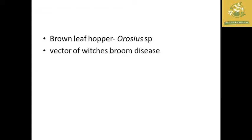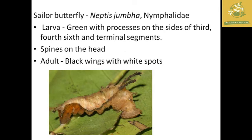The first one is brown leaf hopper, which is an Orius species, and it is a vector of witch broom disease in soybean. The next one is sailor butterfly, where the scientific name is Neptis jumbah, belonging to the family Nymphalidae.